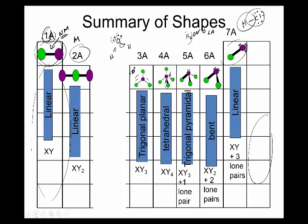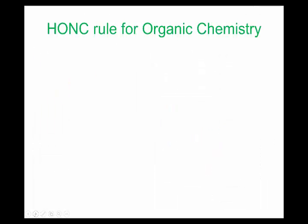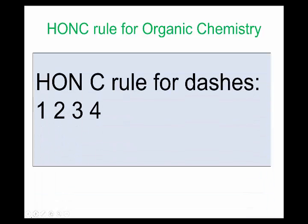There's a rule for dashes called the HONC rule — a mnemonic to get the order correct. H-O-N-C makes you say 'honk.' Hydrogen makes one dash, oxygen makes two, nitrogen makes three, and carbon makes four dashes.